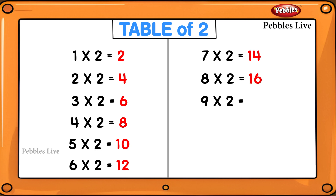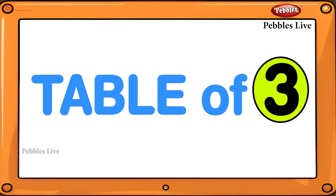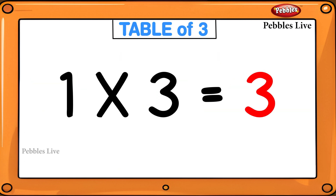9 twos are 18, 10 twos are 20, 11 twos are 22, 12 twos are 24. Table of 3: 1 three is 3.